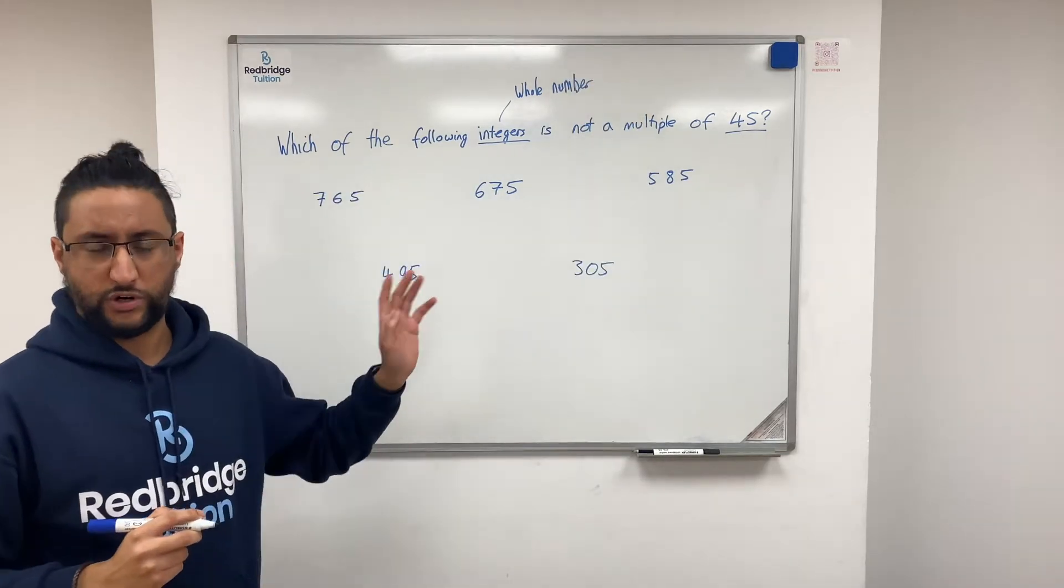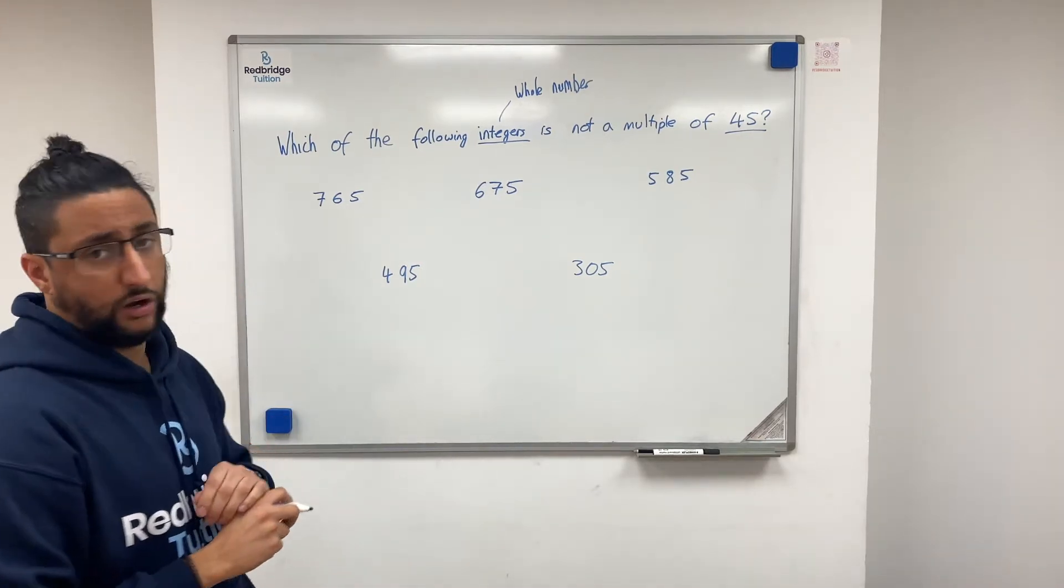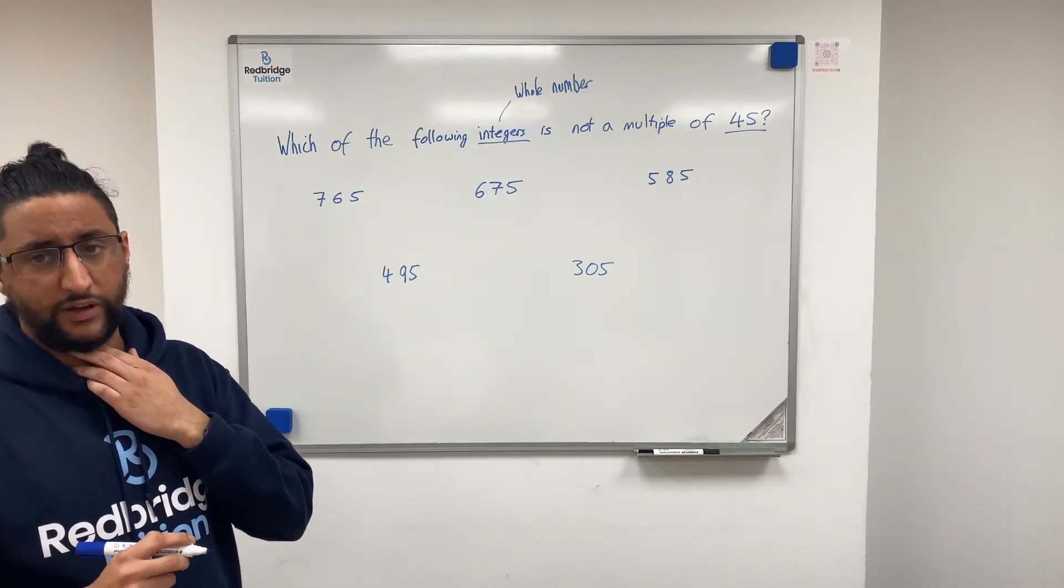A lot of people would just try and divide each one by 45 using long division, but that would take a lot of time, especially in a paper. You don't have that much time.